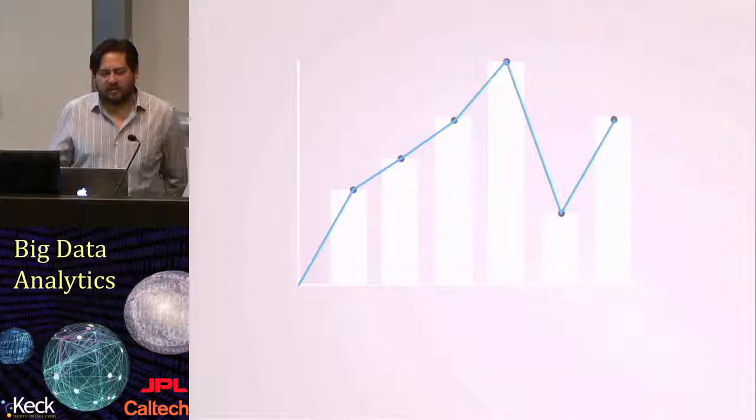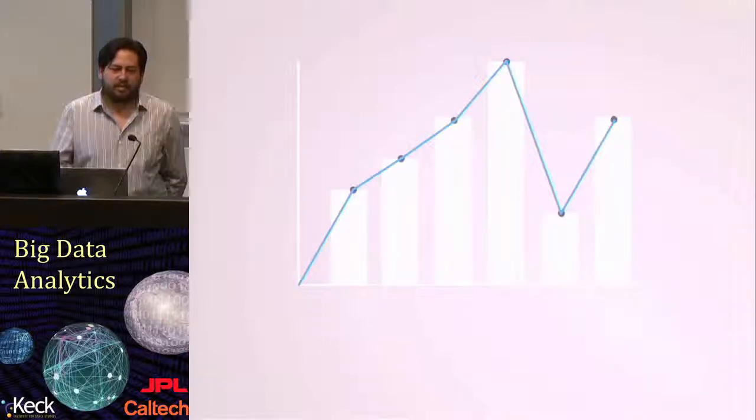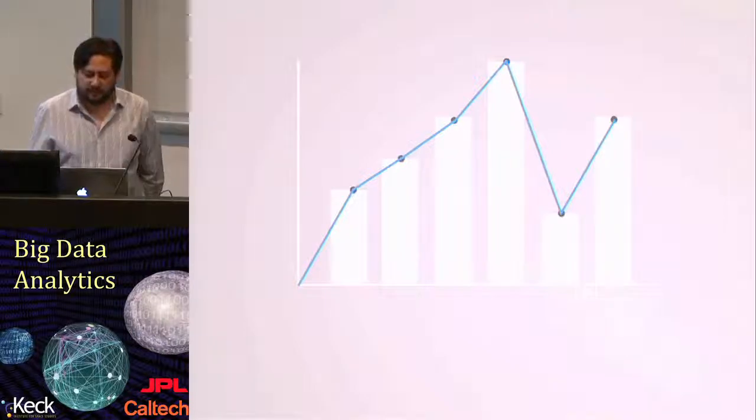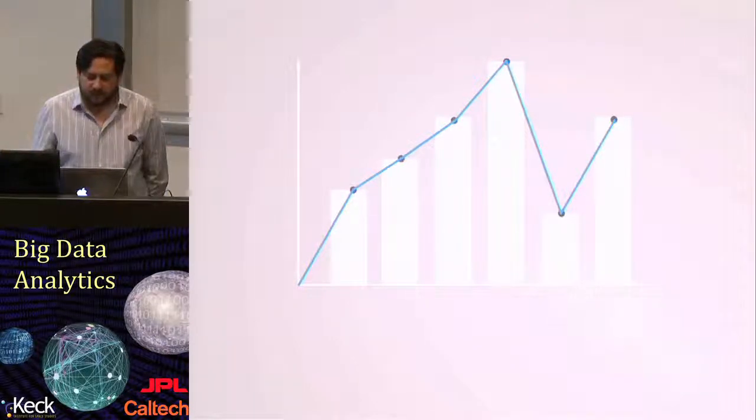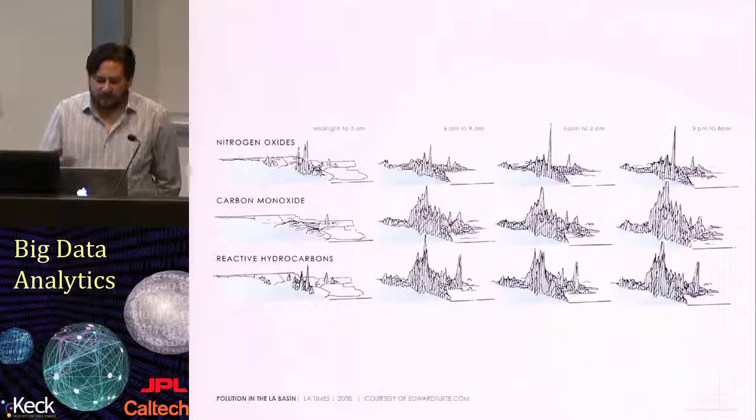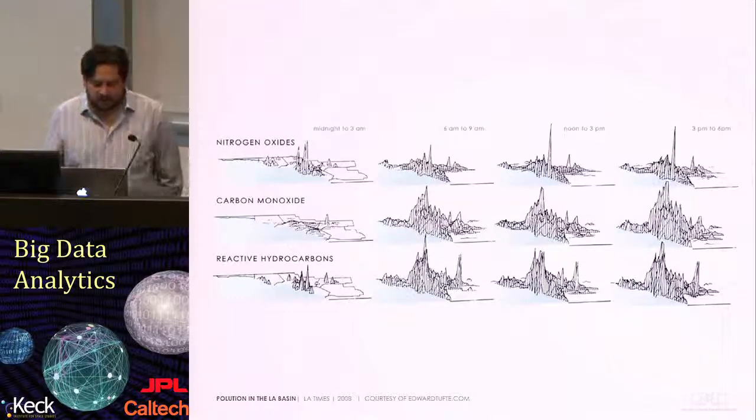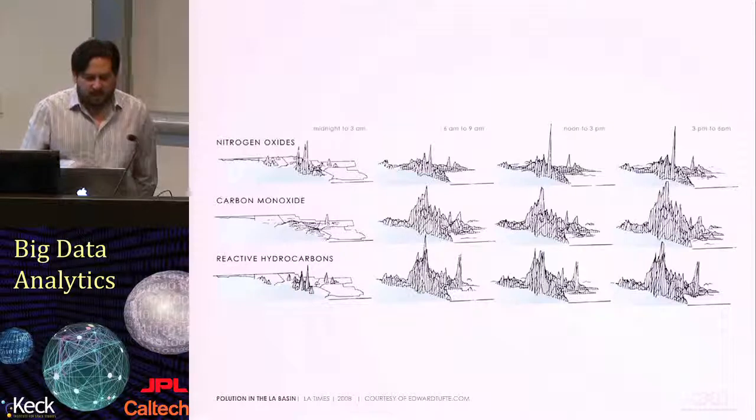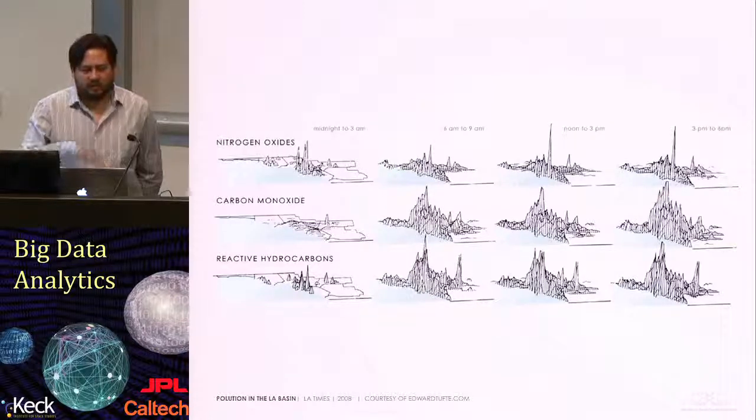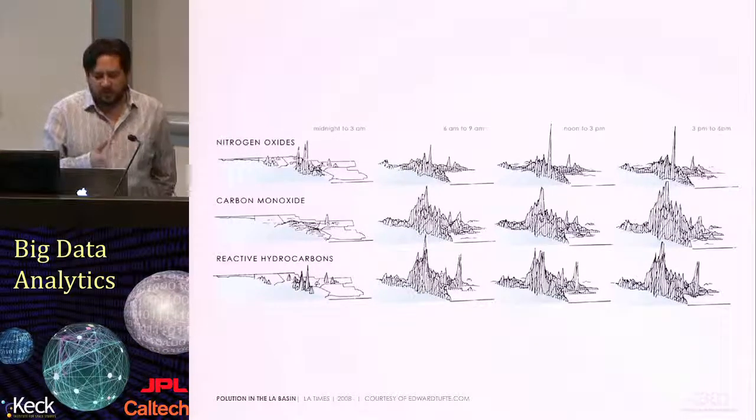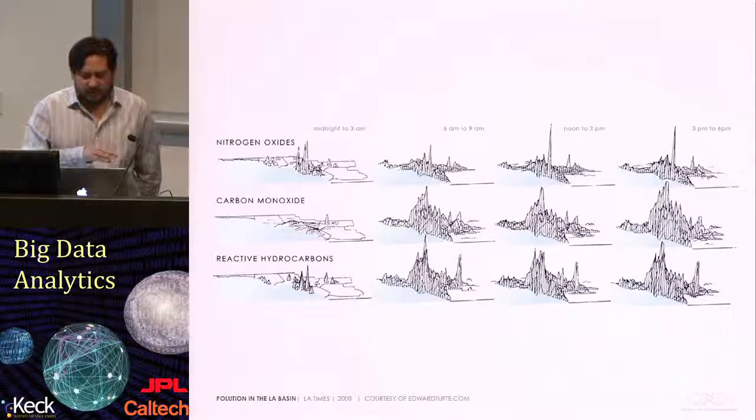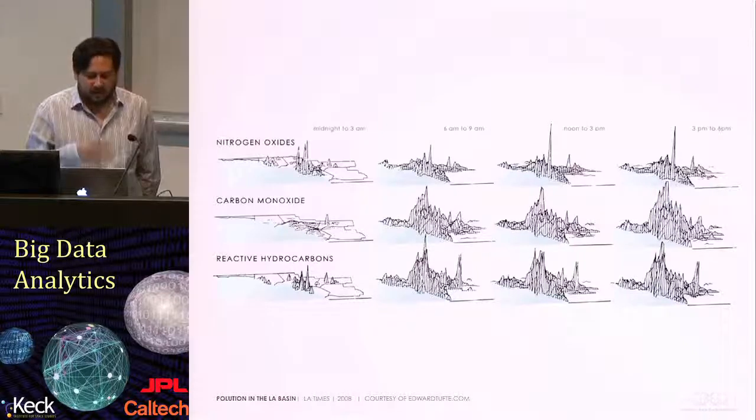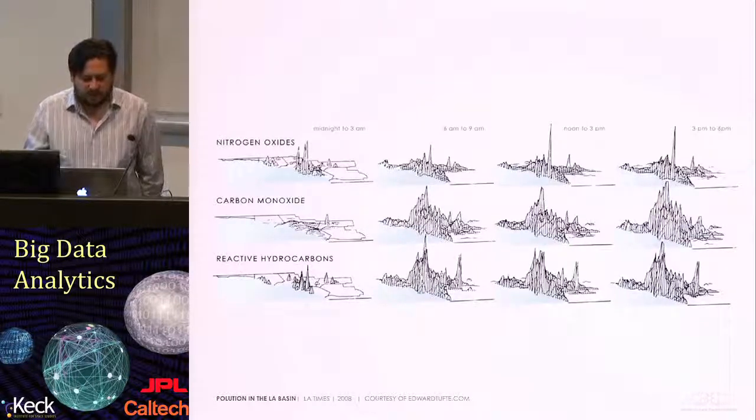You can add complexity to this simply by overlaying different plots together. Now you're actually making several points at the same time. Similarly, if we look at an example that Edward Tufte showed in 2008, we actually have here a series of plots that are actually both showing different elements in pollution in the L.A. basin at different times. This is what he called small multiples.